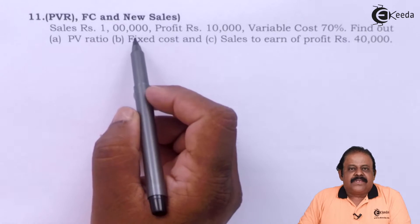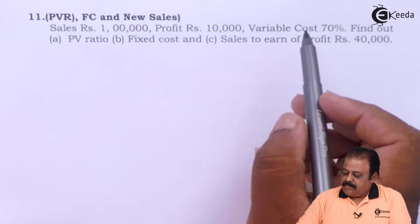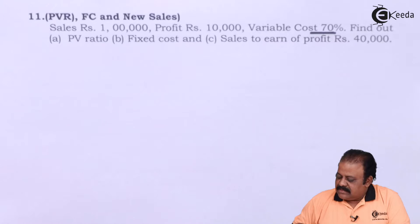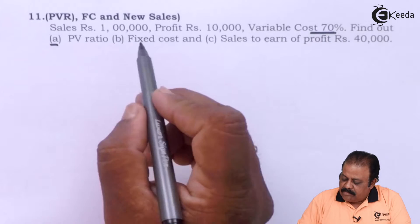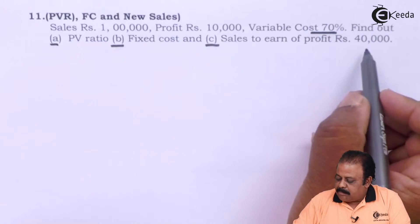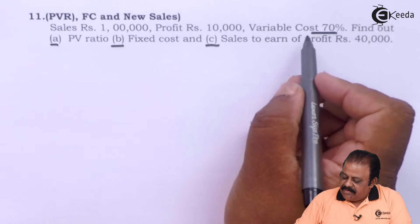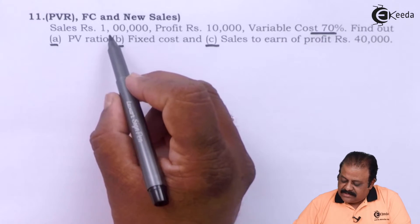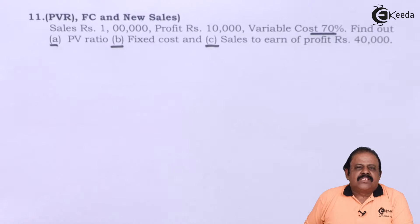Sales rupees 1 lakh, profit rupees 10,000, variable cost 70%. Find out PV ratio, fixed cost, and sales to earn profit of rupees 40,000. Here we have information that sales is 1 lakh and variable cost is 70%. Based on this we can find out the amount of variable cost.